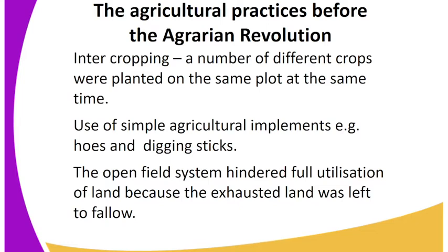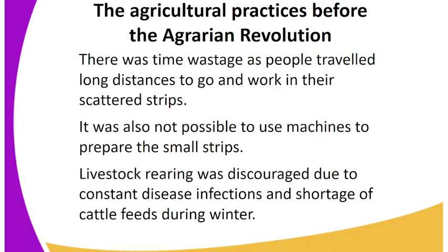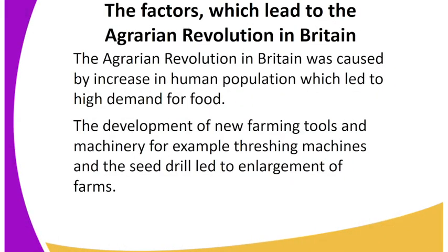Simple agricultural implements such as hoes and digging sticks were used. The open field system hindered full utilization of land because exhausted land was left to fallow. There was time wastage as people traveled long distances to work in scattered strips. It was not possible to use machines to prepare the small strips, and livestock rearing was discouraged due to constant disease infections and shortage of cattle feed during winter.